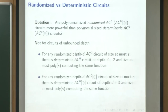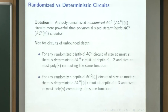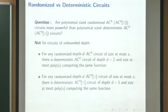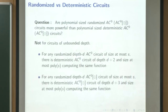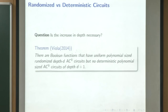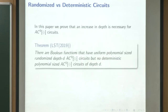Given any AC0 parity circuit of depth d computing a Boolean function, we can get a deterministic circuit of depth d plus 3. In the AC0 case, one can show that the requirement of 2 extra depth is necessary. We want to answer the same question for AC0 parity — whether the increase of 3 is necessary. We have some progress: for AC0 we can show the depth increase of 2 is necessary, and for AC0 parity we can show at least one increase in depth is necessary.